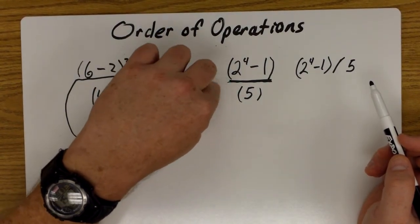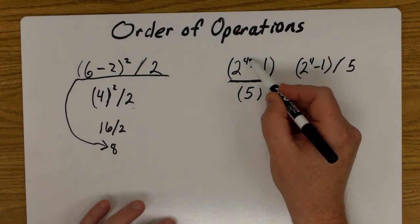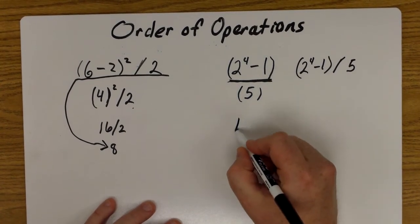We still got to do exponents first. Two to the fourth power is going to give us 16 minus one, all over five. We still need to do the rest of the numerator before I divide by five.